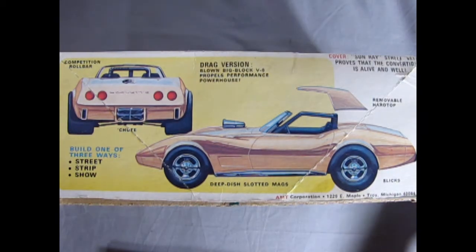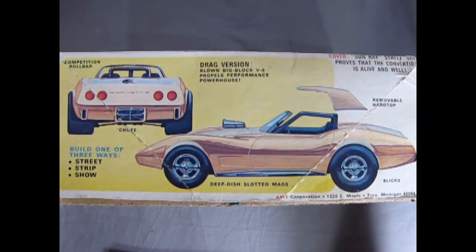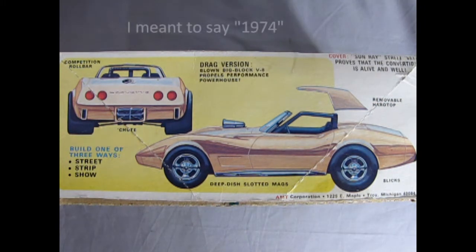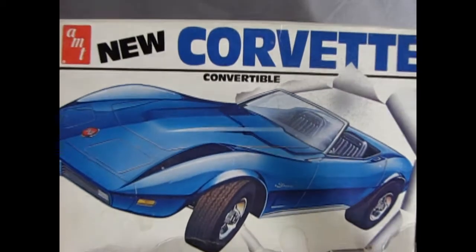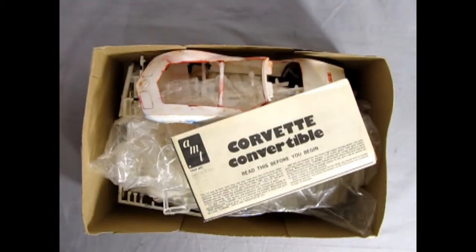On the cover it says a Sunray Street version proves that the convertible is alive and well, which is pretty ironic considering that in 1975 the convertible was phased out. 1975 was the last year with the 454 cubic inch engine on the option list. Now it's time to take the lid off this great model kit to see what's in the box.